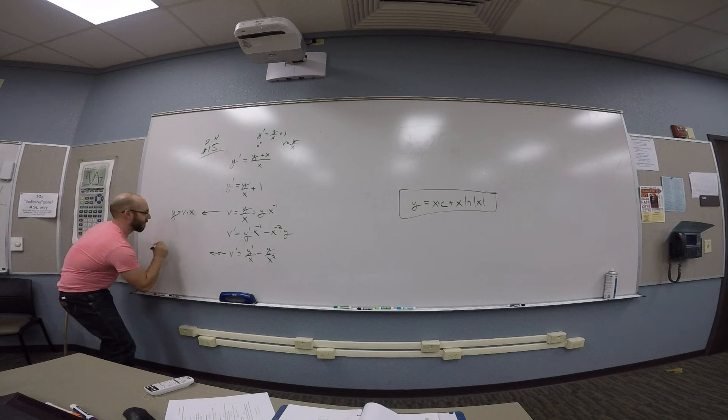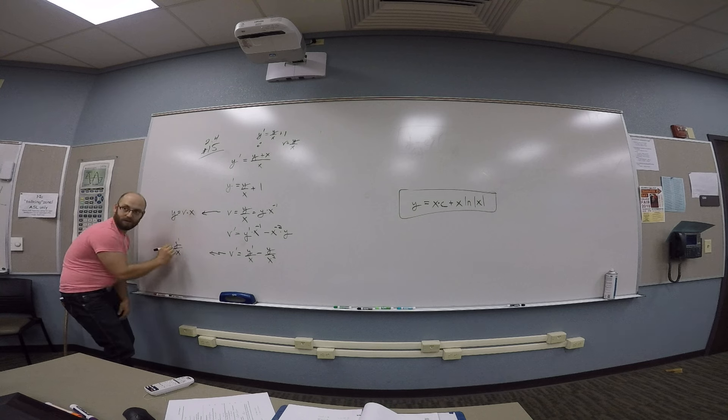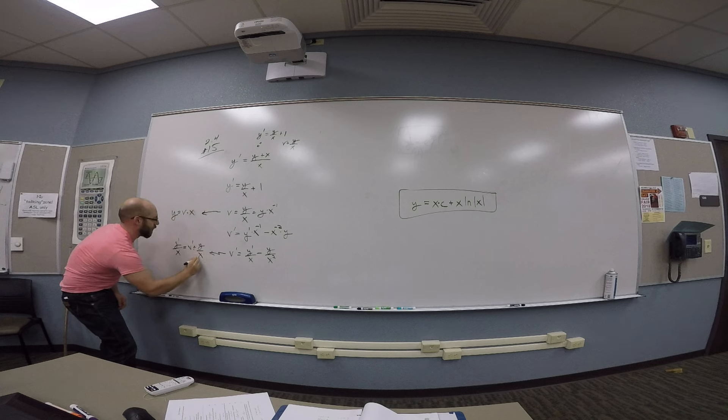It tells you that y prime over x is v prime plus y over x squared.